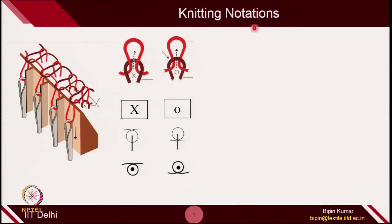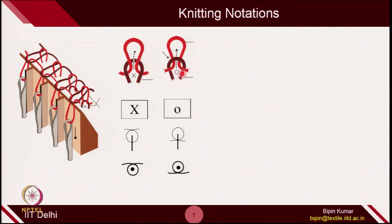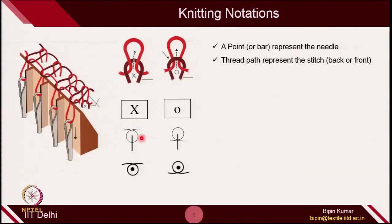Knitting notation is extremely important from a design point of view, because the number of fabrics you can create in weft knitting is unlimited. These notations will be very useful to speed up the process and help others understand fabric structures. Point and bar diagrams are quite popular in industry because they represent the needles - how many needles have been used and the nature of yarn being followed.